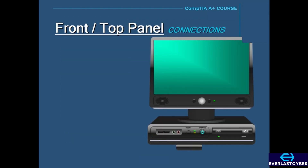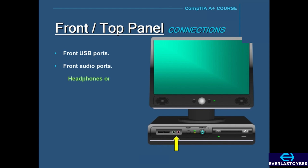Most computers today will have certain common connections on the front panel of the computer for easier access. For example, you may find some USB ports in the front, and you may find some audio ports — one for headphones or speakers, and another one for a microphone. Additionally, on the front panel, you will see the power button, which is for turning the computer on and off.